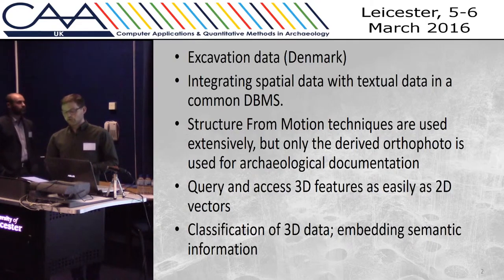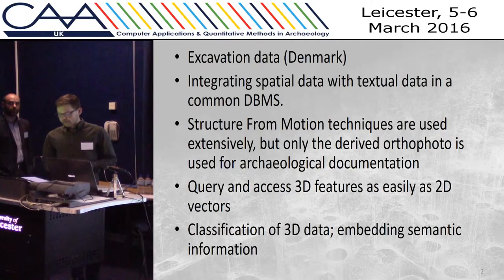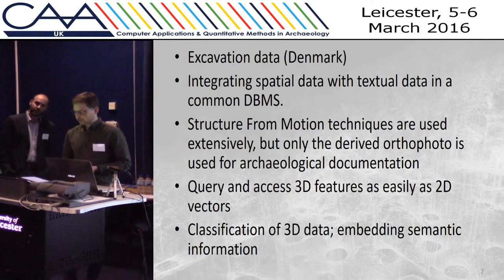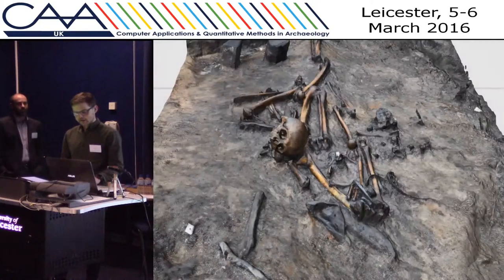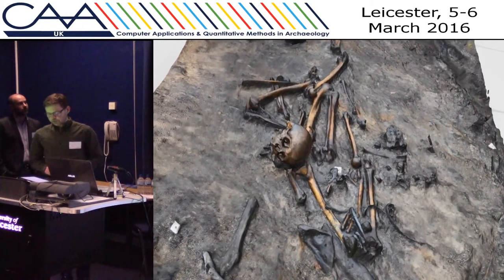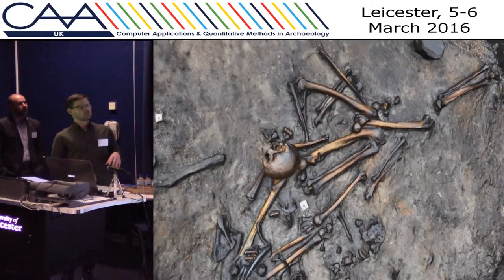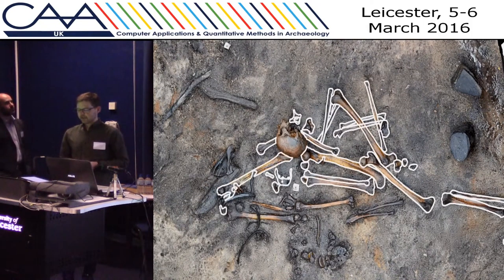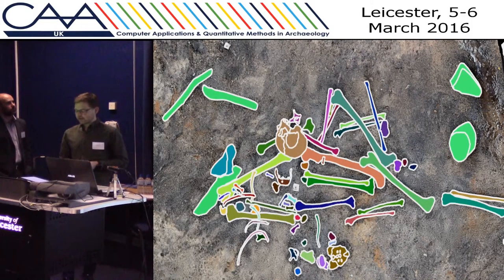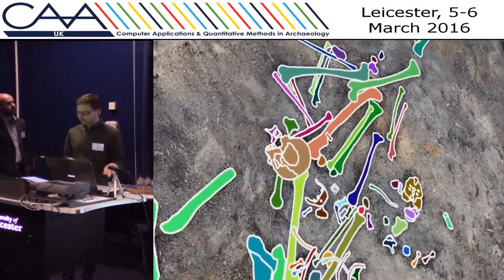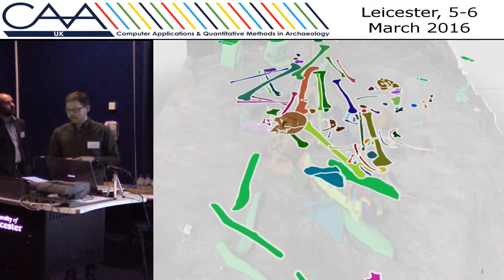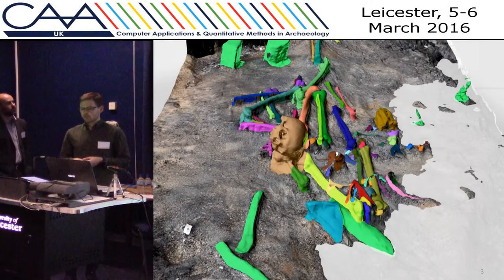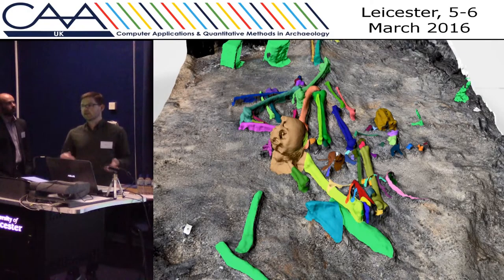SFM is generally only used to create orthophotos, which are then vectorized and used as traditional hand drawings. The concept I'm working on is based on classification of 3D data so that we may archive and use it with the same functionality as GIS files. I use the 3D data and the vectorization data with its semantic content to automatically classify the 3D data. Although this example is rough, it's automated and adds an additional dimension to the 3D data by embedding information directly into the 3D model rather than having it detached.